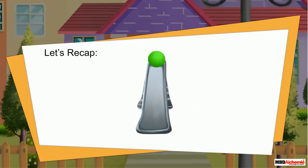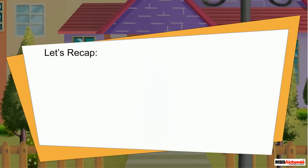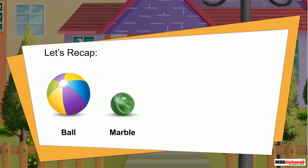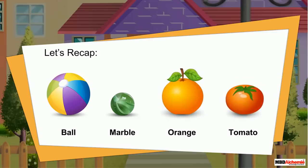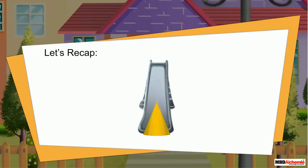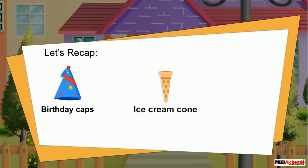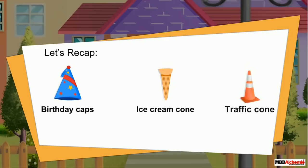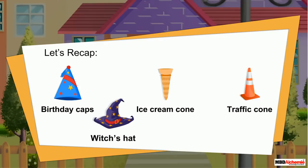A sphere only rolls because it has a curved surface. A ball, a marble, an orange, and a tomato are all spheres. A cone slides as well as rolls. A birthday cap, an ice cream cone, a traffic cone, a witch's hat, and a funnel are all cones.